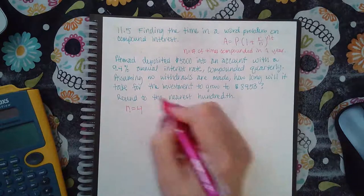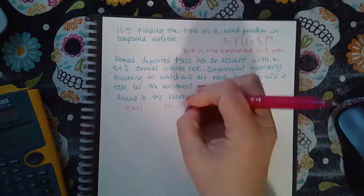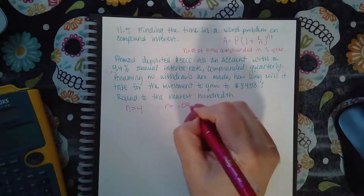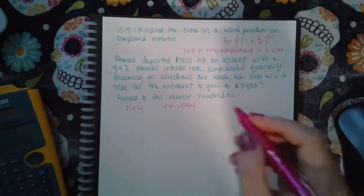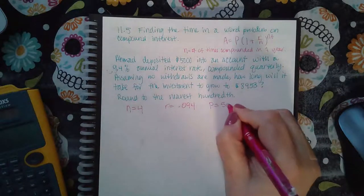The rate is actually going to be 0.094. And then the amount that I deposit, so that's going to be my present value, what I put in at the beginning, right?